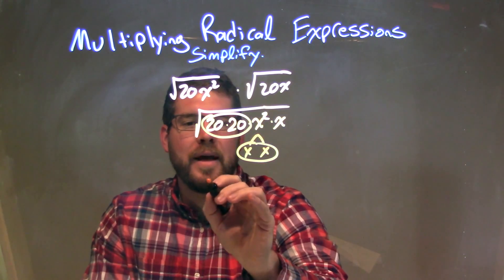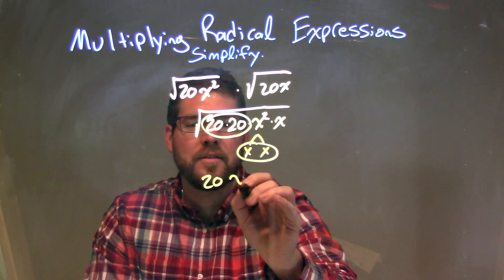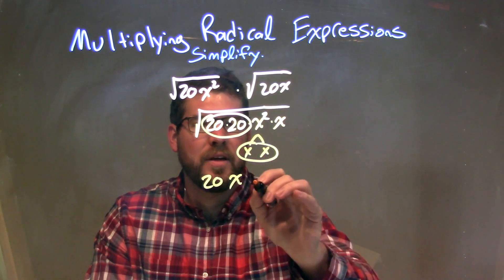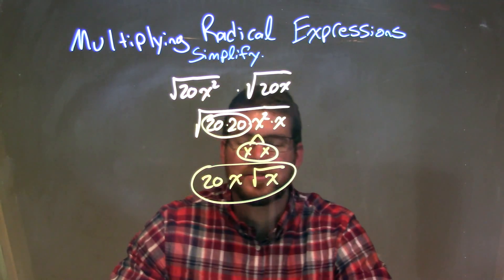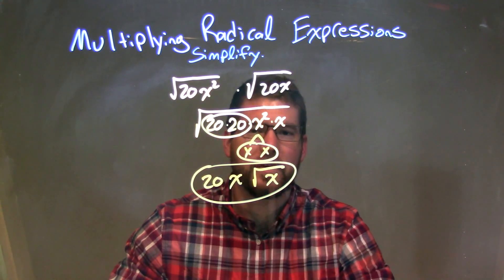So, each pair represents a single on the outside. There's 20 on the outside. There's an x on the outside. Left with just this one x on the inside, the square root of x, and there we go. Our final answer here is just 20x times the square root of x.